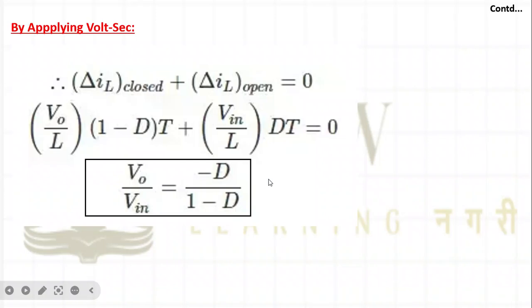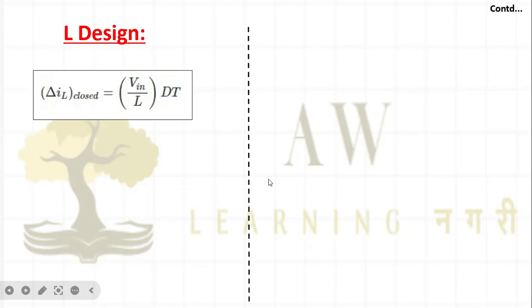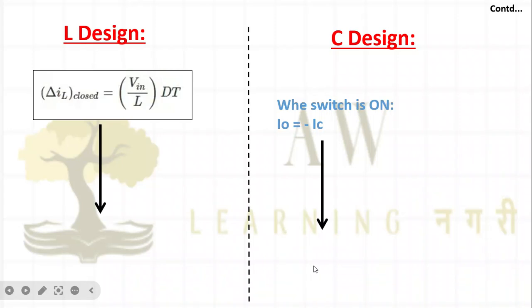For the buck-boost converter inductance design: ΔI_L = V_in / L × D·T_s; rearrange to find L. For capacitance design: find I_C in either on or off duration. When the switch is on, I_out = −I_C. Replace I_C with C·(dV_C/dt), integrate, and find the capacitance value. These exercises can be completed independently using the methods already described.